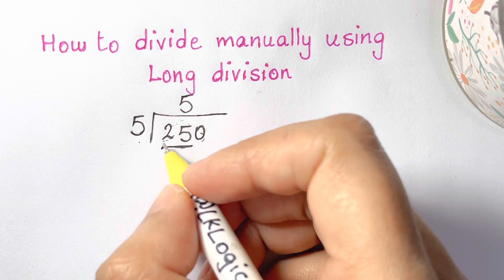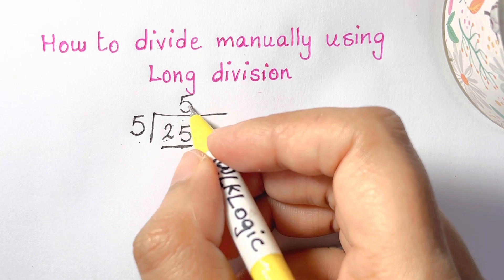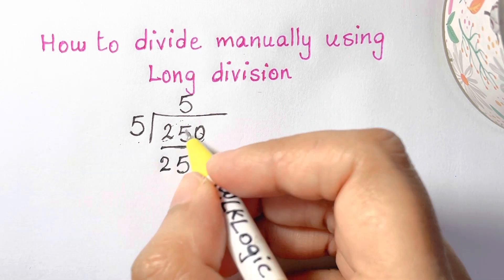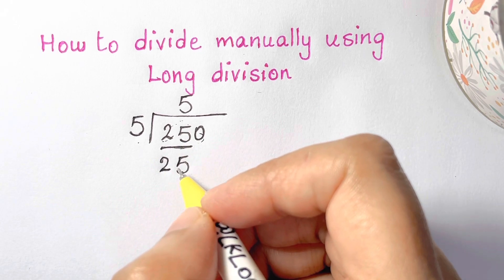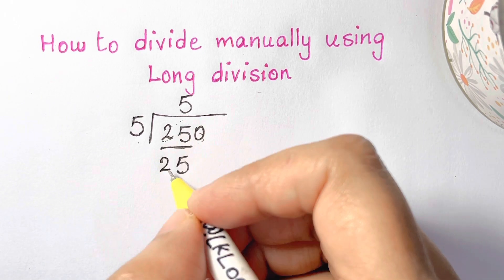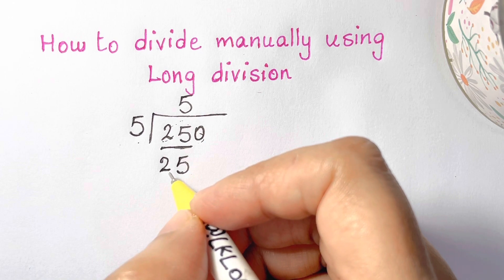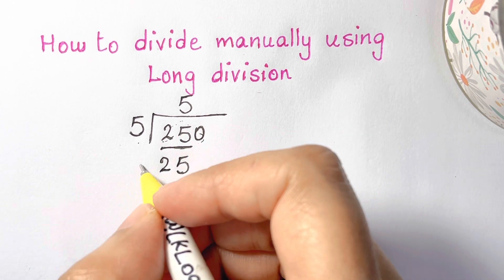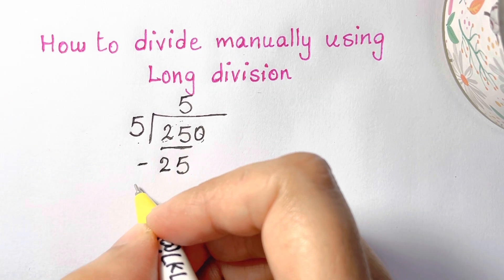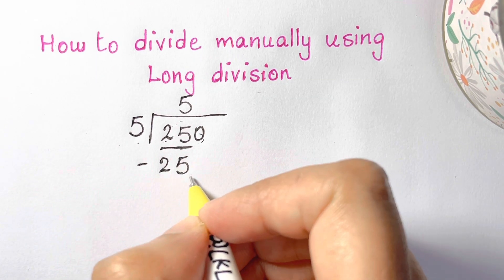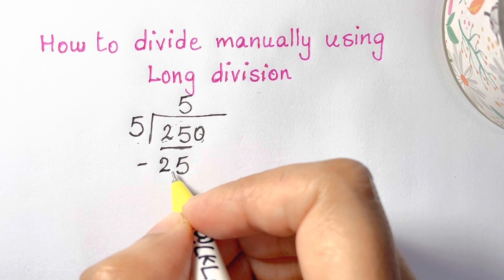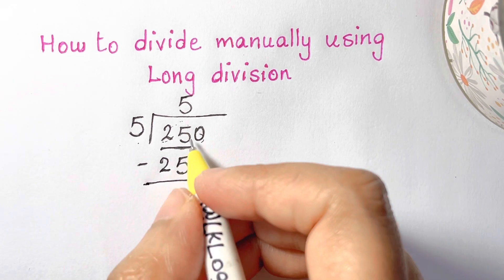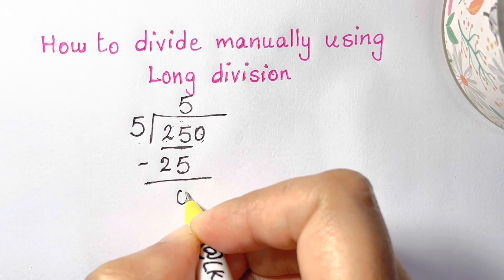Then we multiply 5 times 5, which is 25. Make sure you line up that number directly below. Then you start subtracting — that's the next step. You subtract this number that you multiplied from the number above. In this case it's just 0: 25 minus 25 is 0.